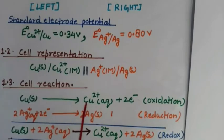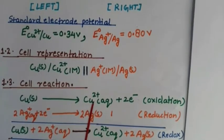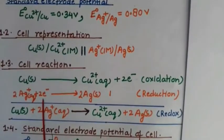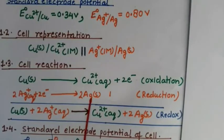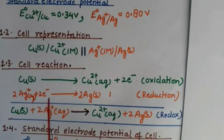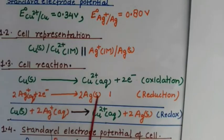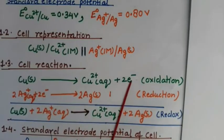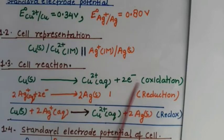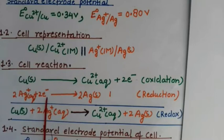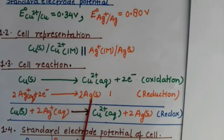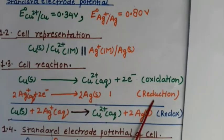Copper is being oxidized at the anode: Cu(s) → Cu²⁺(aq) + 2e⁻. At the cathode, silver ions accept electrons: Ag⁺(aq) + e⁻ → Ag(s). Since the oxidation involves a loss of two electrons, we multiply the reduction half-reaction by 2: 2Ag⁺(aq) + 2e⁻ → 2Ag(s). The two electrons are canceled when combining the two half-reactions.